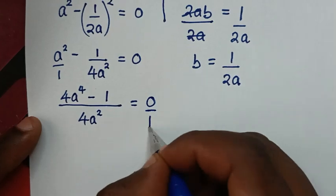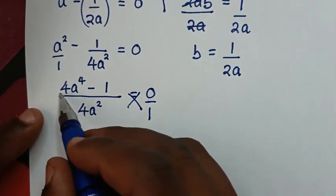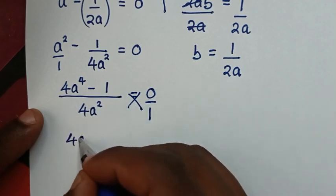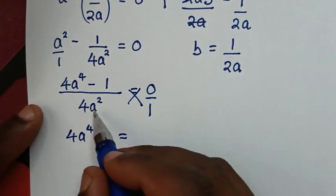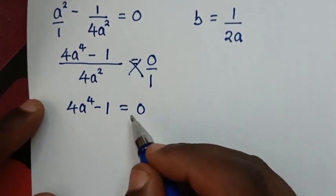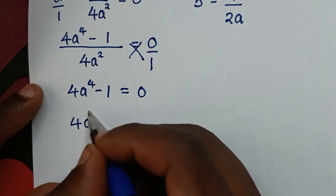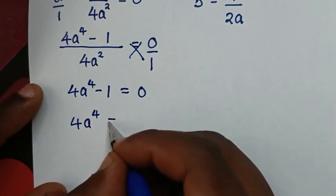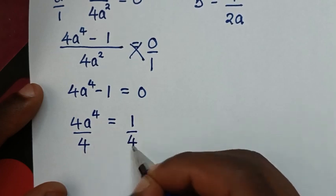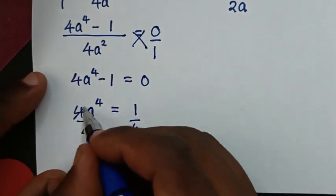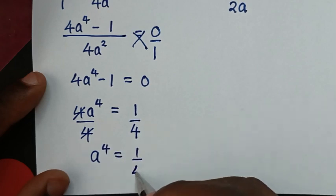We cross-multiply: 4a² times a² minus 1 equals 0, so 4a⁴ minus 1 equals 0. Then we take negative 1 to the other side: 4a⁴ is equal to 1. Then we divide by 4 on both sides, so a⁴ is equal to 1 over 4.